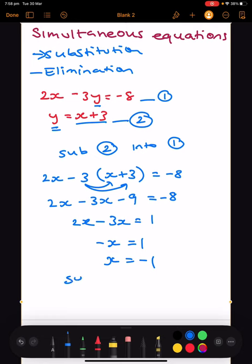Now that I've solved for x, I can substitute x = -1 into equation 2 to find y. y = x + 3, which means y = -1 + 3. -1 + 3 is 2, therefore y = 2.